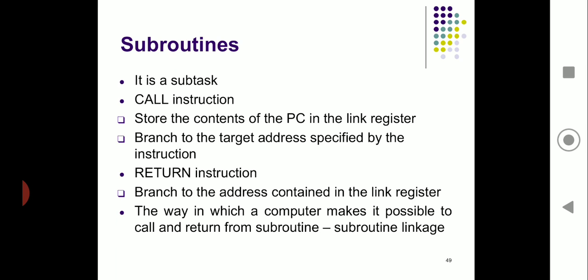In today's class we learned that a subroutine is nothing but a subtask, and in order to execute this subtask we require two important instructions — the call instruction and the return instruction. These values are stored inside a program counter. In order to do this mechanism of call and return, we require a register where we store our addresses, and this process is called subroutine linkage.